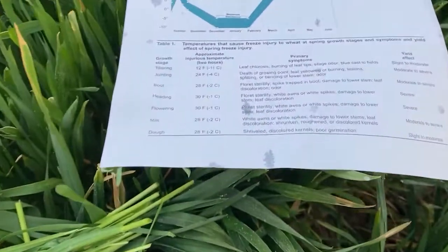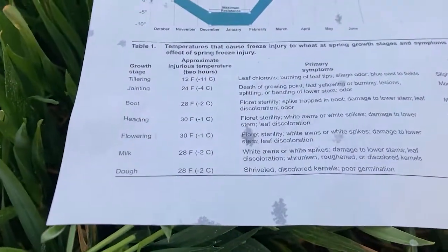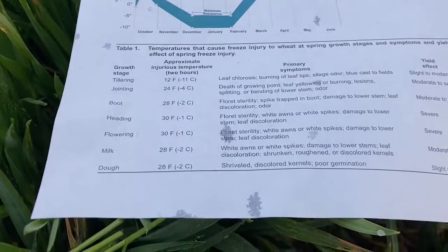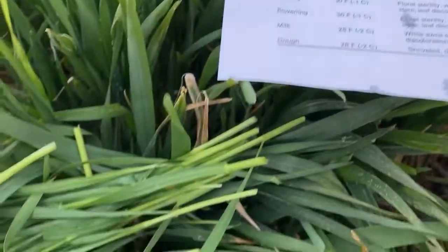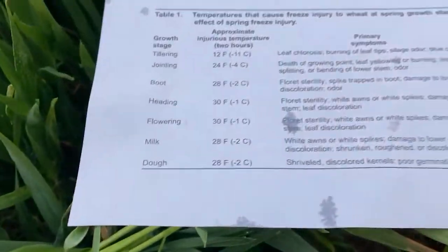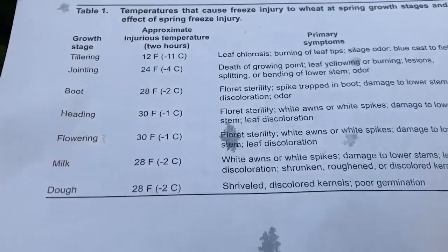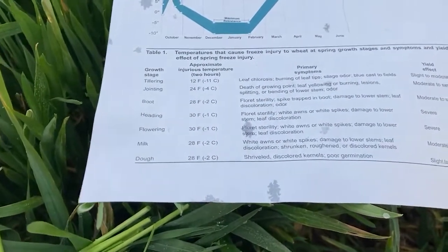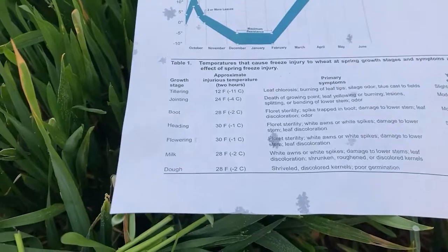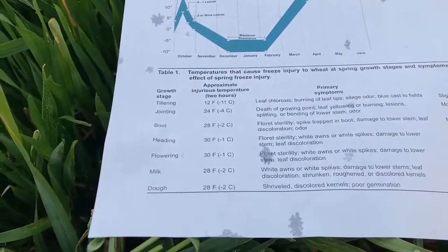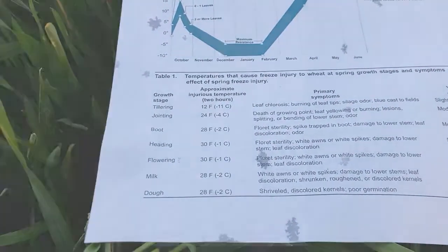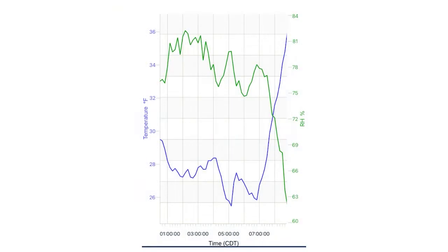It's about temperature, it's about duration of temperature, it's about growth stage, and these growth stages indicate the sensitive temperatures. There are some things we don't understand — one of which is humidity. We've been logging temperatures and relative humidity because we don't know the impact of humidity.